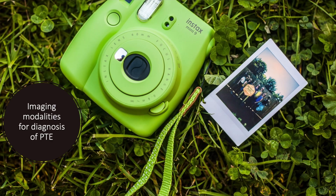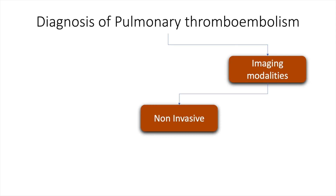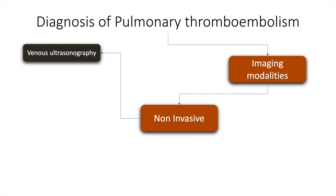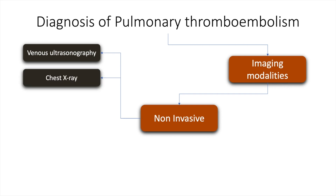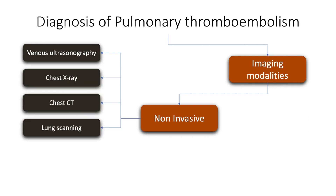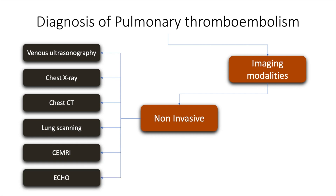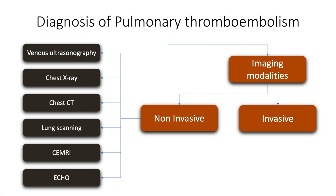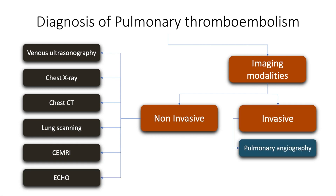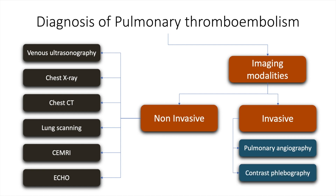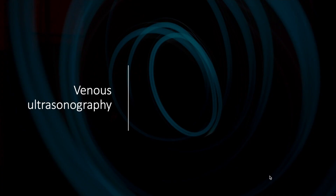The imaging modalities for diagnosis of pulmonary thromboembolism may be non-invasive, including venous ultrasound, chest x-ray, chest CT, lung scanning, contrast MRI, and 2D echocardiogram. The invasive modalities include pulmonary angiography and contrast phlebography.